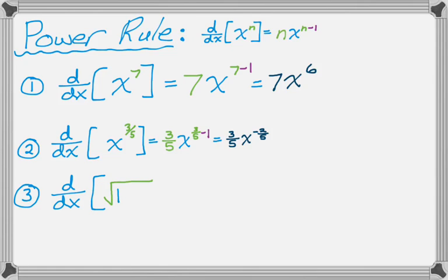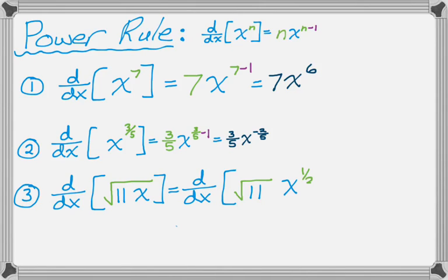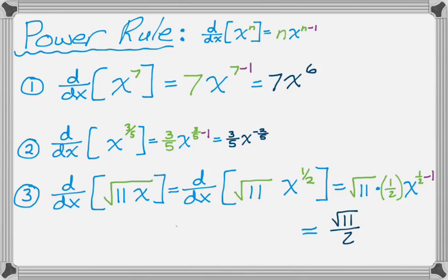Here's the derivative of the square root of 11x. The first thing I'm going to do is rewrite this, because as written it's not a power function, so I can't use the power rule. Once rewritten as a power function, I can use the power rule. The radical 11 just stays out front; bring the power down, subtract 1 from the power, and then clean it up a little bit. Alright, so that's the power rule — I'm assuming you remembered, but who knows.